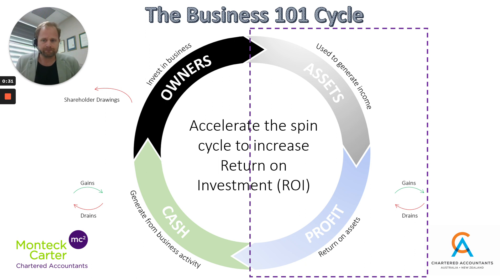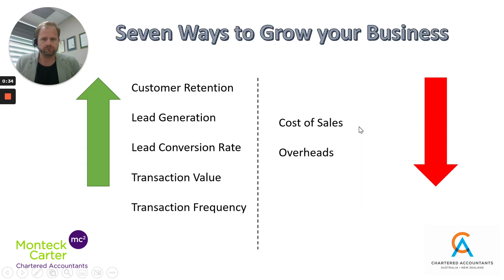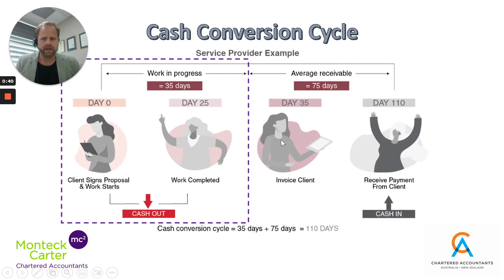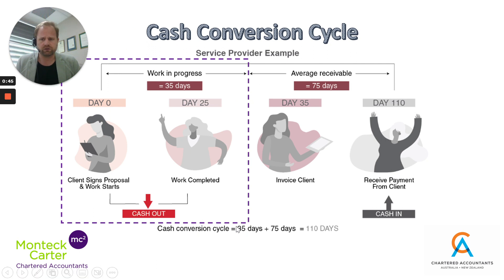We've focused on that from the P&L side — we looked at the seven ways to grow your business — and then we looked at the start of the cash conversion cycle, focusing around work in progress and how the faster we can do the work and get it invoiced, the faster that cash is going to come into the business.